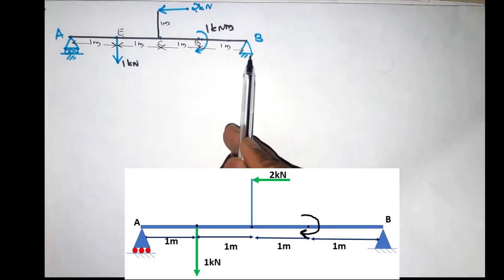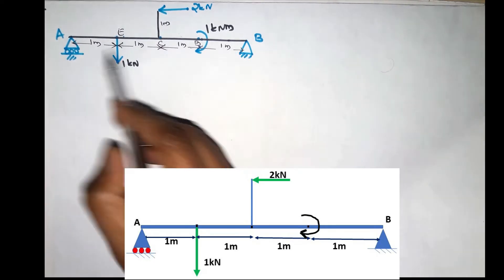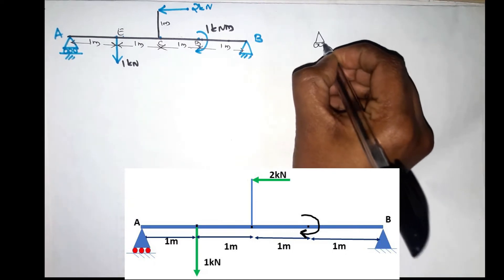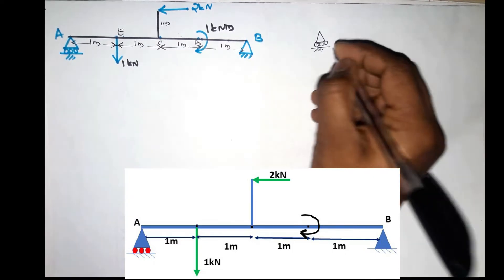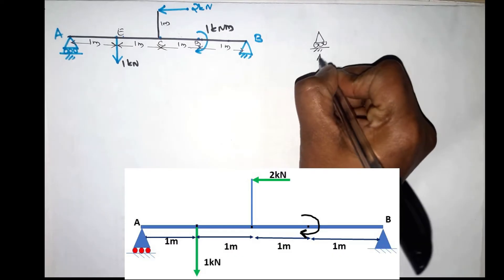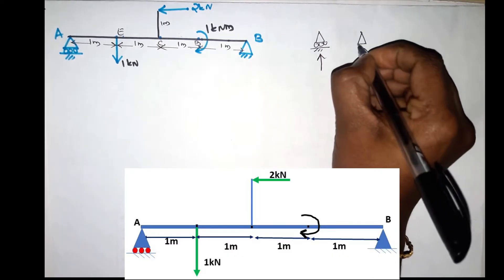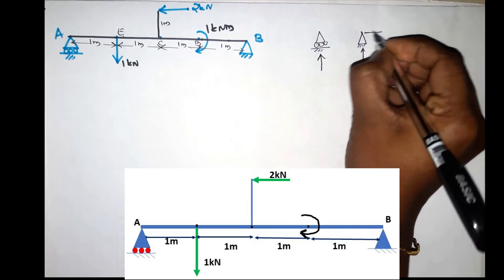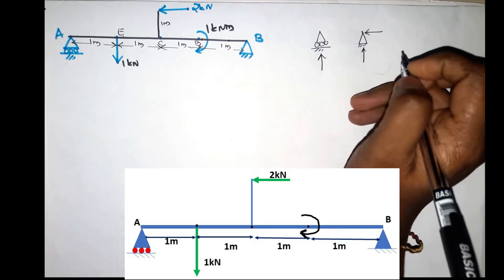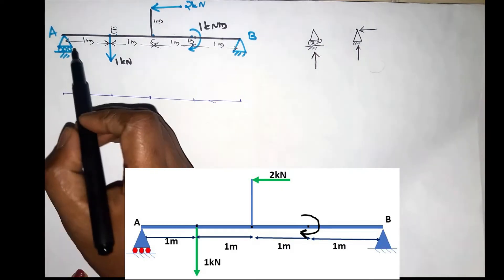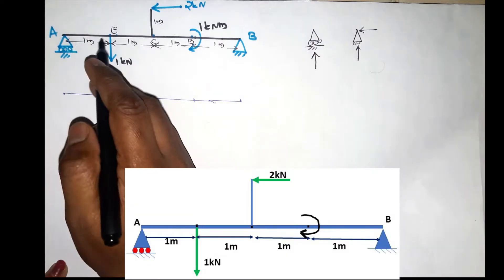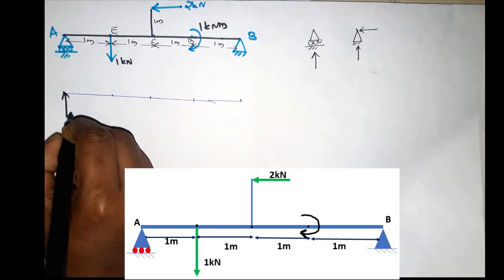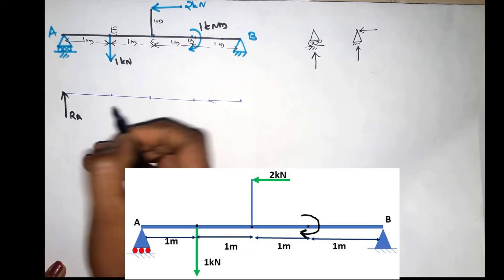A is a support, B is a hint. How do we share the reaction? We will start by role. We will take a vertical reaction as well. We will draw a hinge support. We will write a horizontal reaction and try to call the horizontal reaction. We will make a reaction.